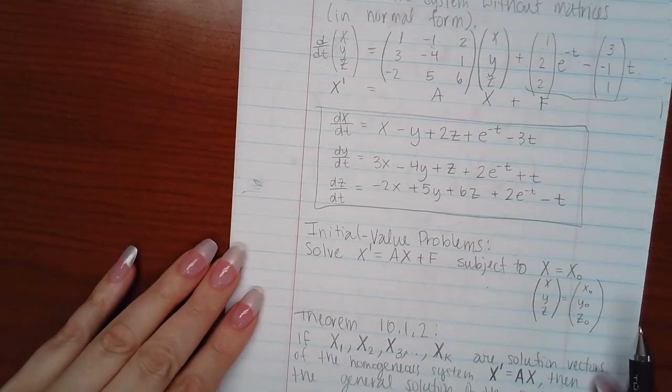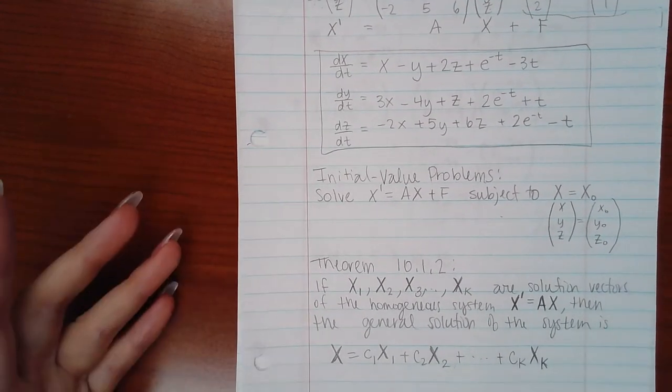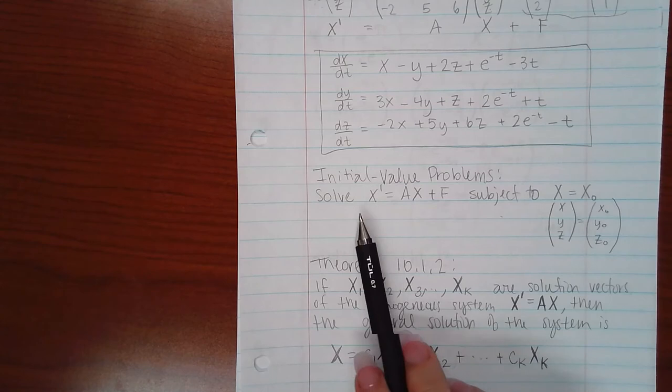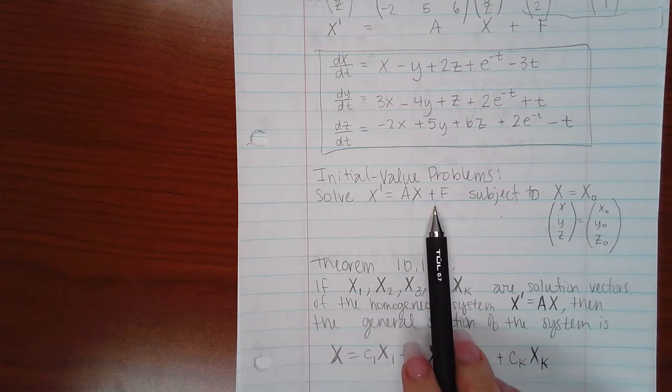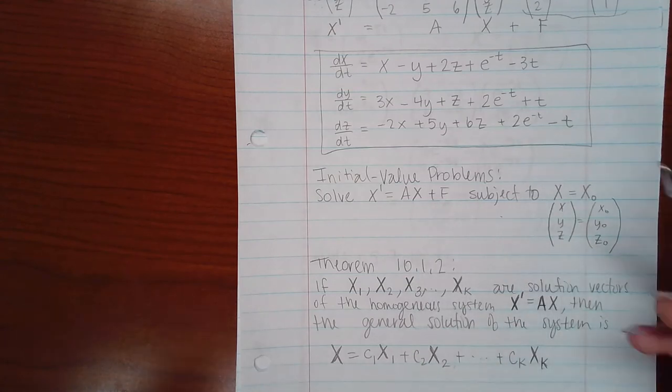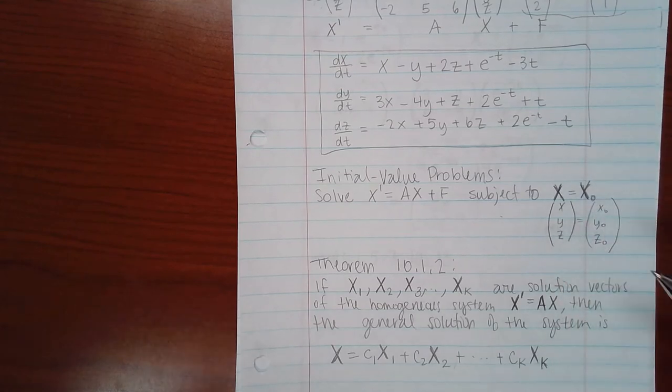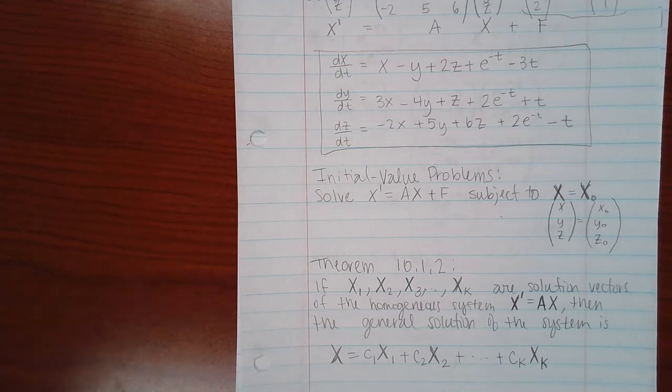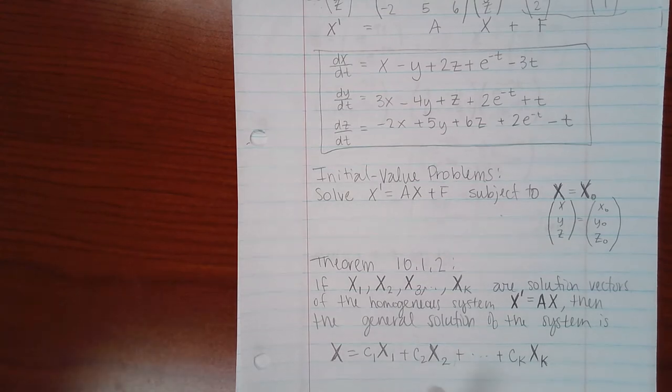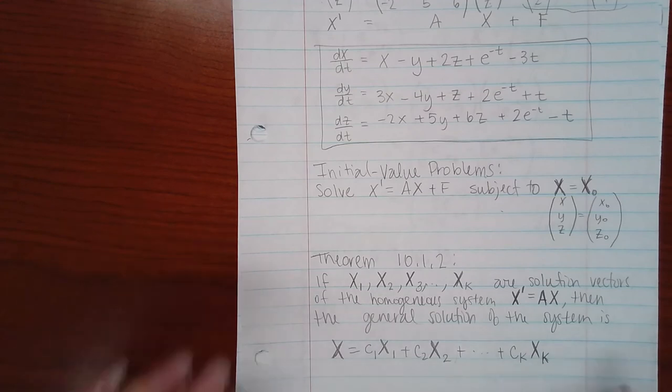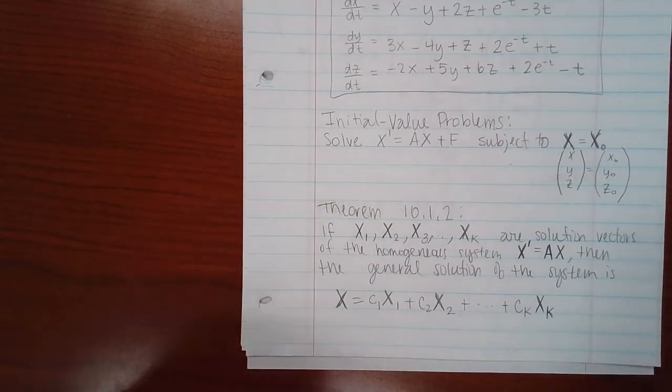Now, in systems of DE's, you can have initial value problems, which we haven't seen yet. So you'll be given the matrix form of the system, and then it'll tell you that it's subject to the X matrix equal to the X naught matrix. What that means is that all your variables will have their initial components. And so you'll use that to figure out the initial value problem. That'll probably be one of the very last things that we do. First, we need to figure out how to solve the DE's, which we won't do until the next section.